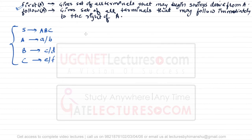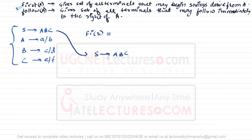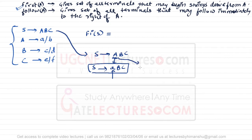Now let us find FIRST of S. FIRST of S means the set of all terminals that may begin strings derived from S. Since S derives A B C, variable A can be replaced by small a or small b. Therefore any string created from S will start with small a or small b. So FIRST of S = {a, b}.